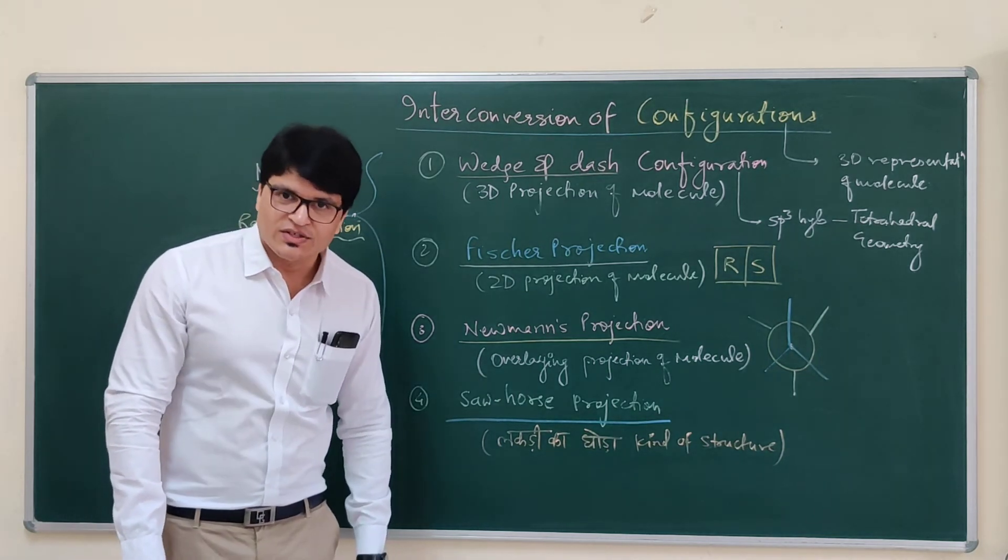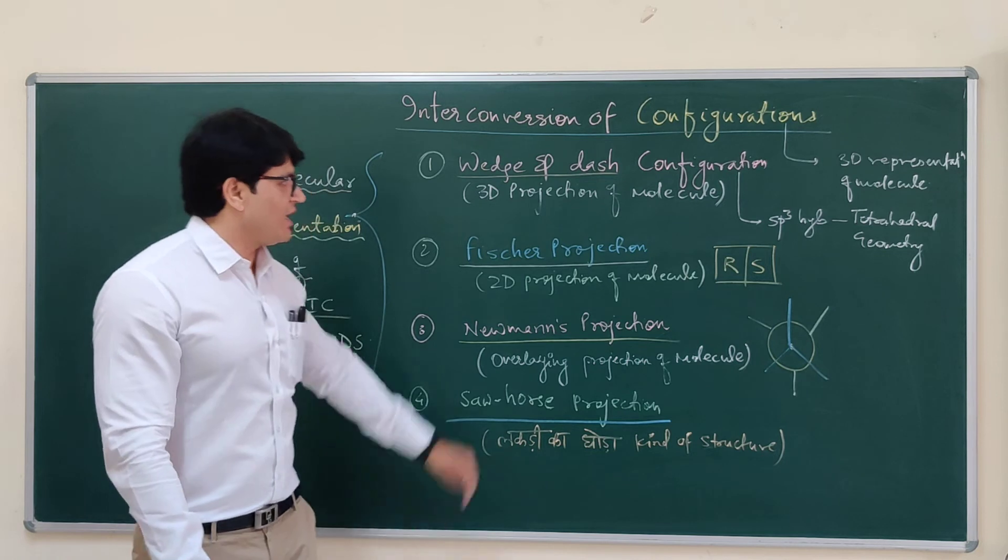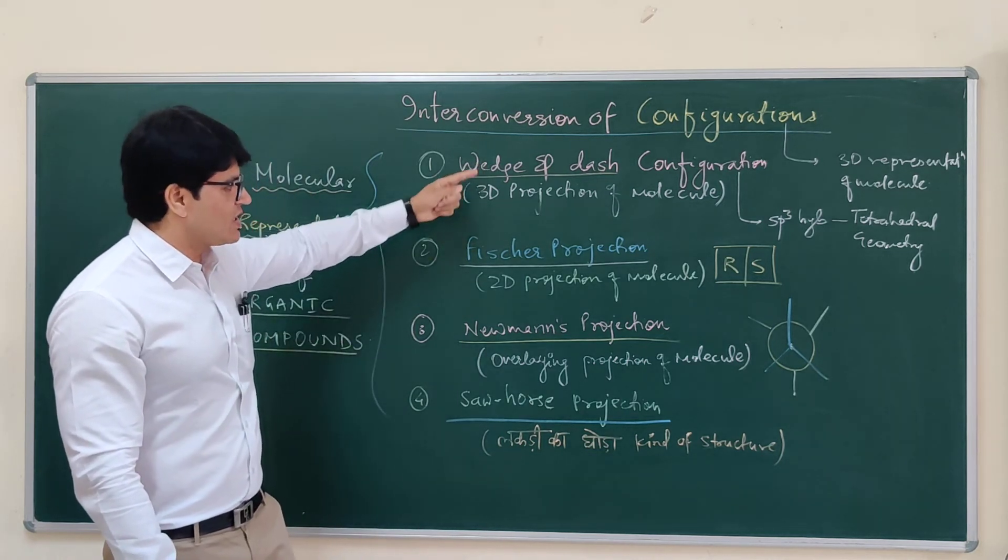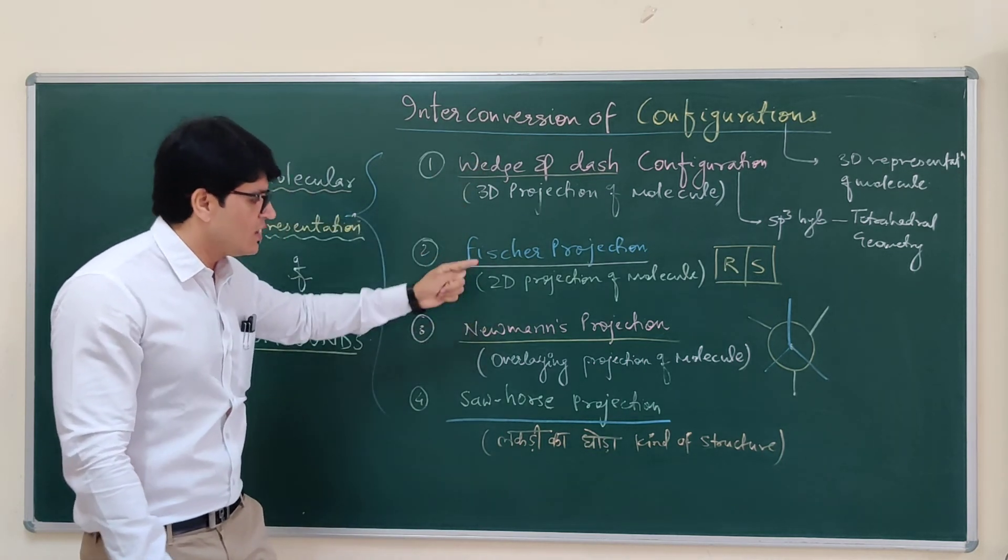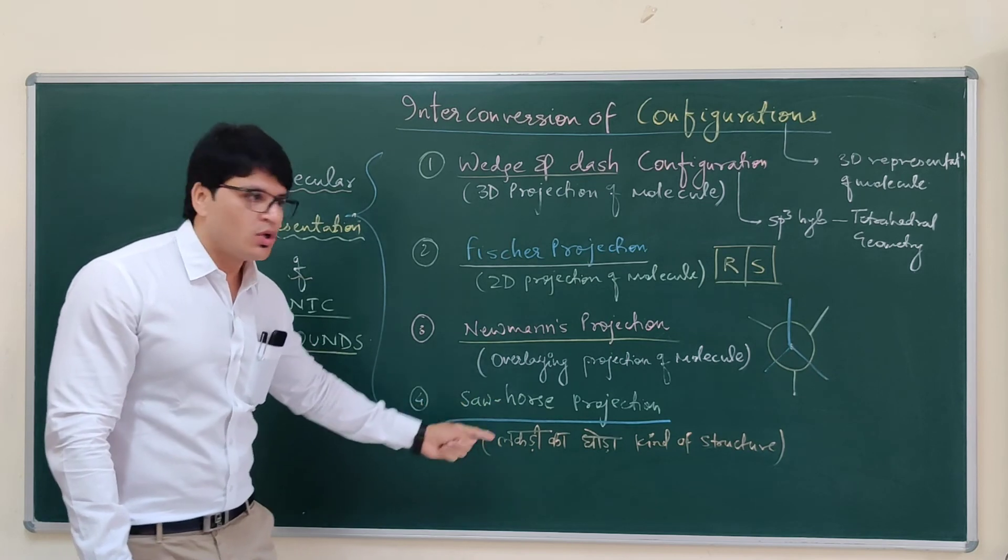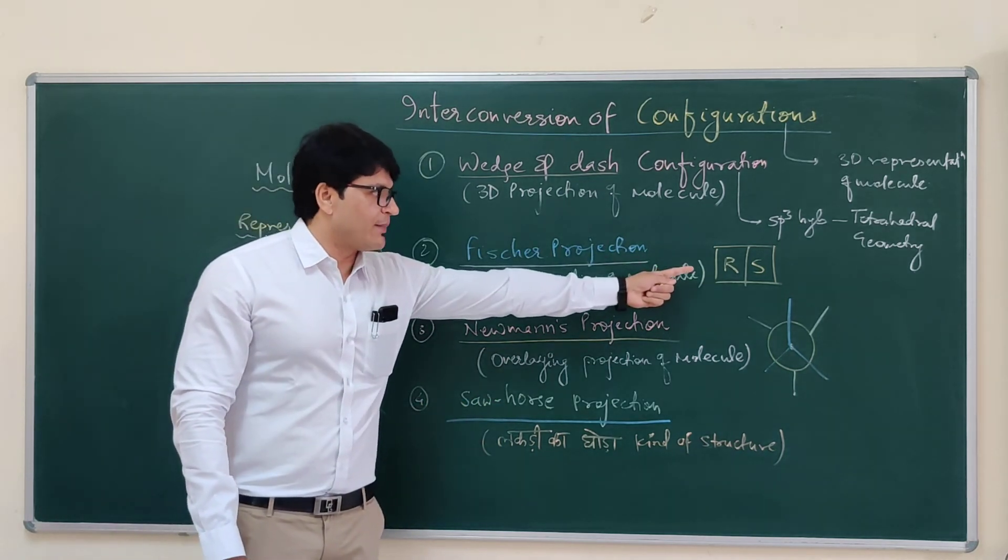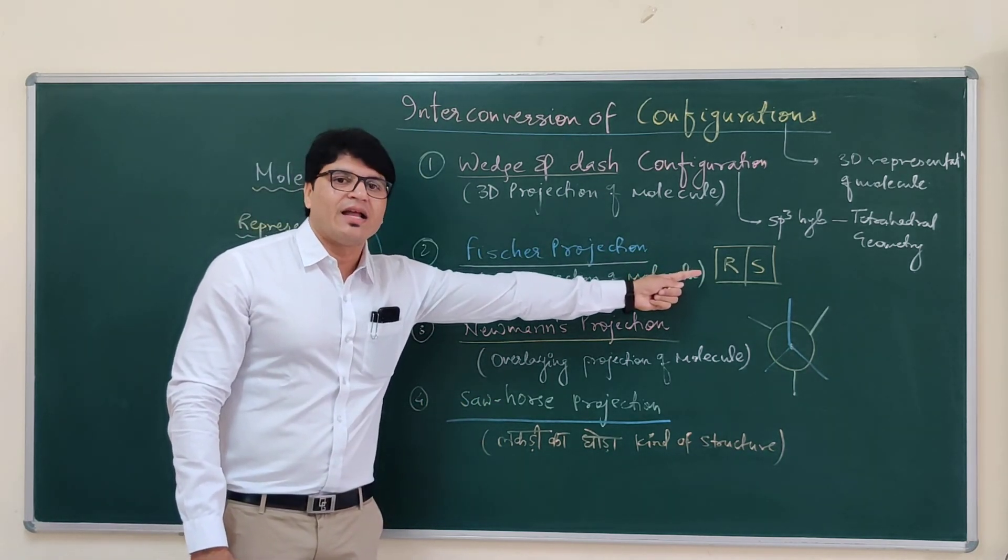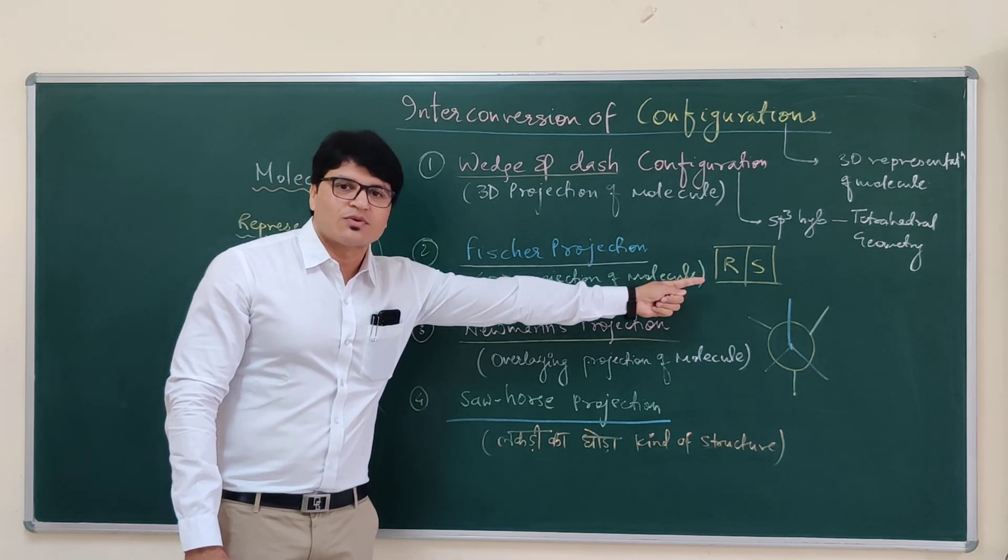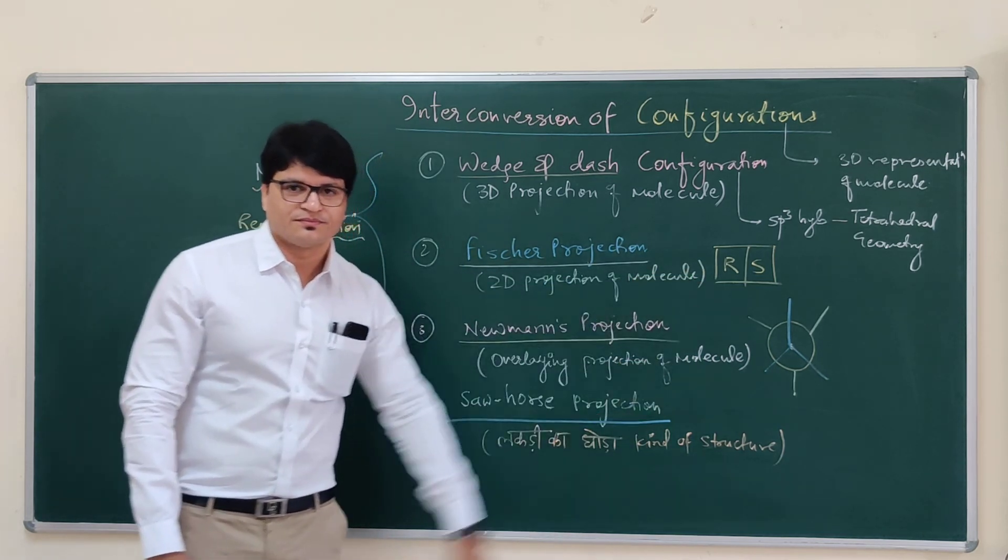We are going to start interconversion of wedge-dash, Fischer, Newman, sawhorse to know the configuration, absolute configuration that is R and S form in the very next lecture. Thank you.